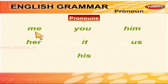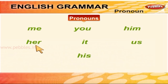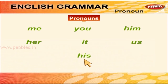Me यानी कि मैं, you यानी कि तुम, him यानी कि वह (पुल्लिंग), her यानी कि वह (स्त्रीलिंग), it यानी कि वह (वस्तु), us यानी कि हम, his यानी कि उसका। ये शब्द आम तौर पर वाक्य में क्रिया के बाद आते हैं।